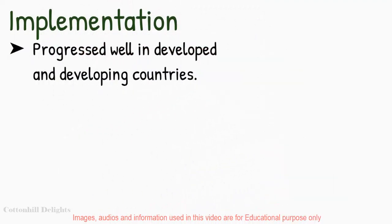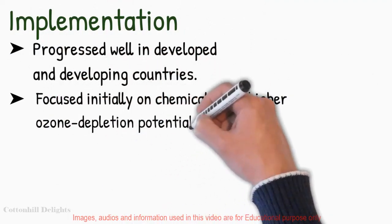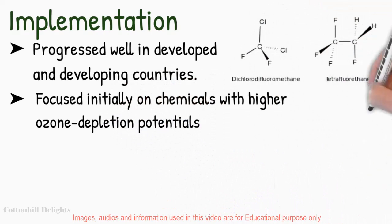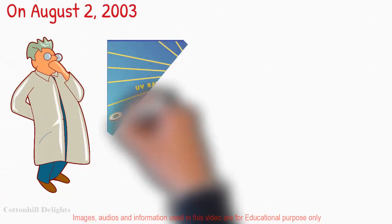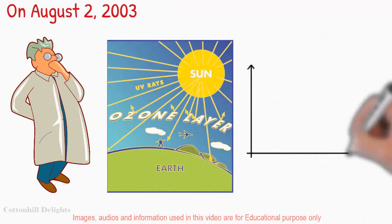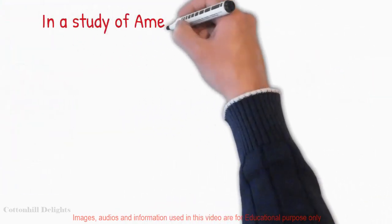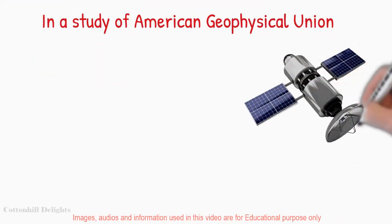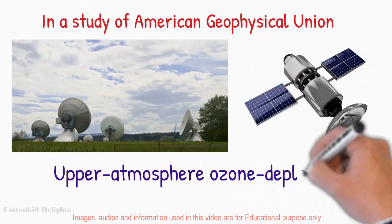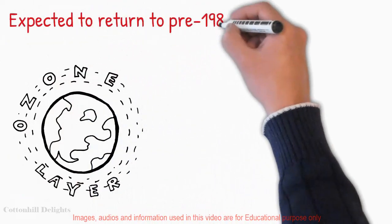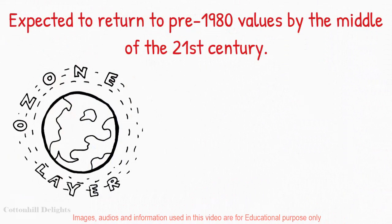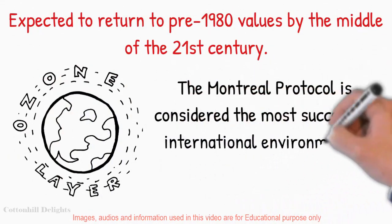Implementation of the Montreal Protocol progressed well in developed and developing countries. Its attention focused initially on chemicals with higher ozone depletion potentials, including CFCs and halons. Today, all of the world's 197 countries have signed the treaty. On August 2, 2003, scientists announced that the global depletion of the ozone layer may be slowing down because of the international regulation of ozone-depleting substances. Three satellites and three ground stations confirmed that the upper atmosphere ozone depletion rate slowed significantly during the previous decade. Now the ozone layer is healing and expected to return to pre-1980 values by the middle of the 21st century. The Montreal Protocol is considered the most successful international environmental agreement to date.